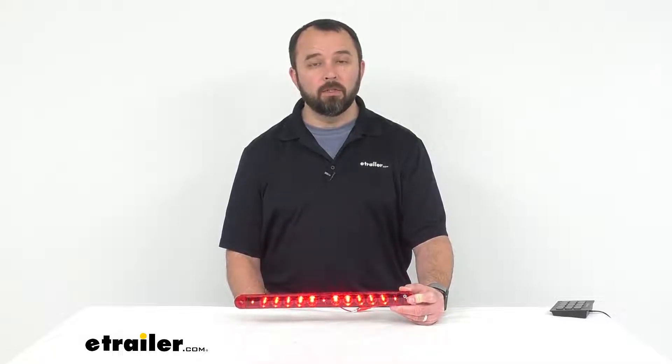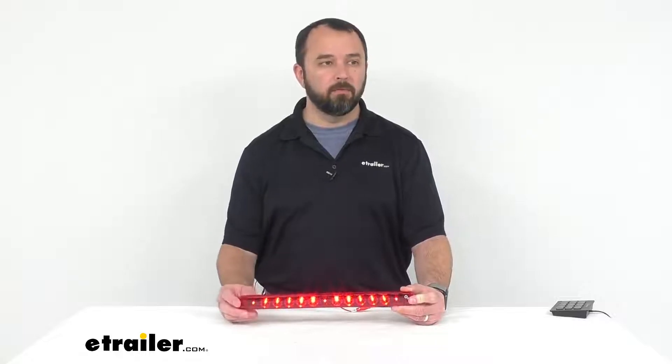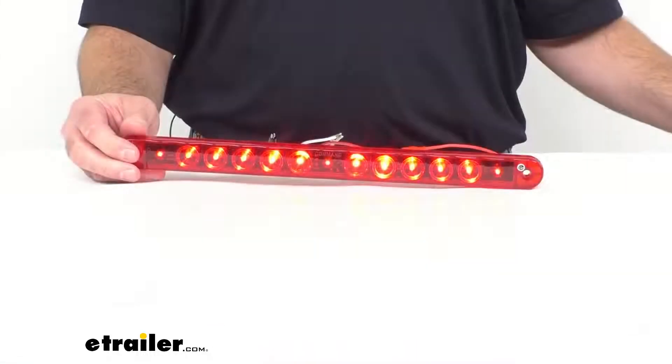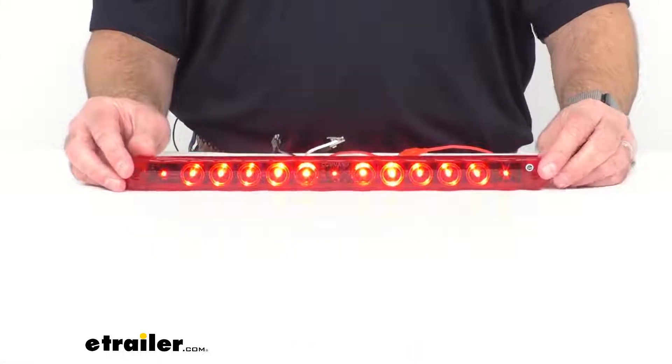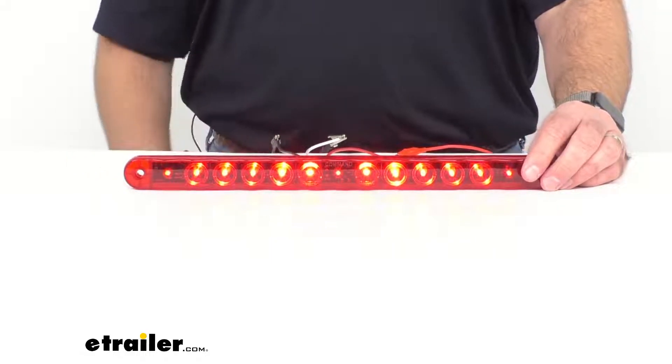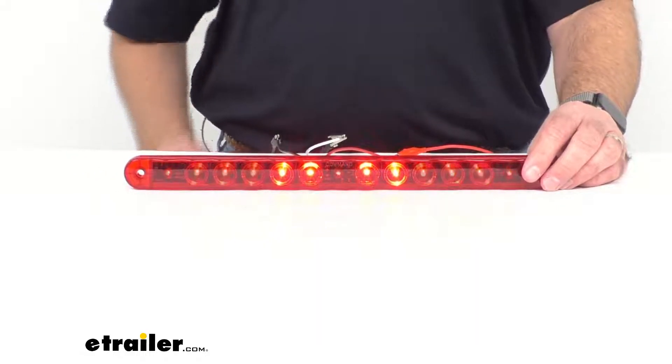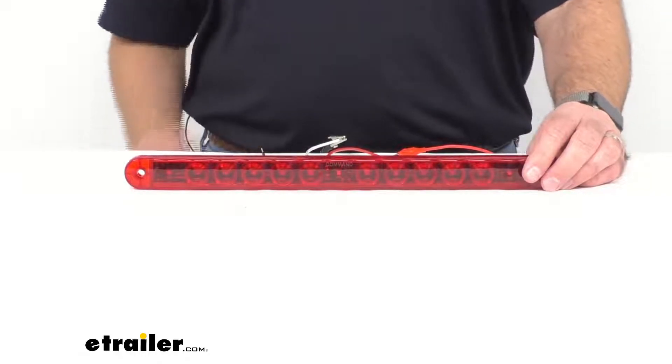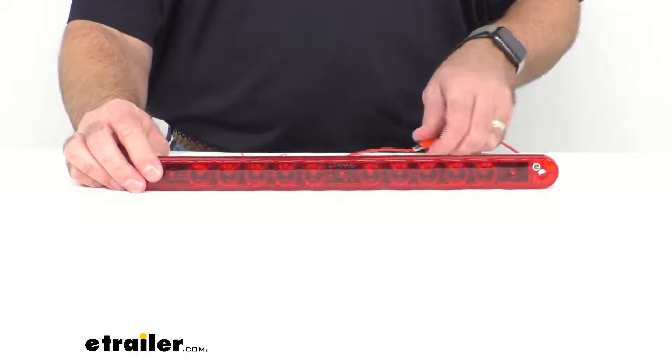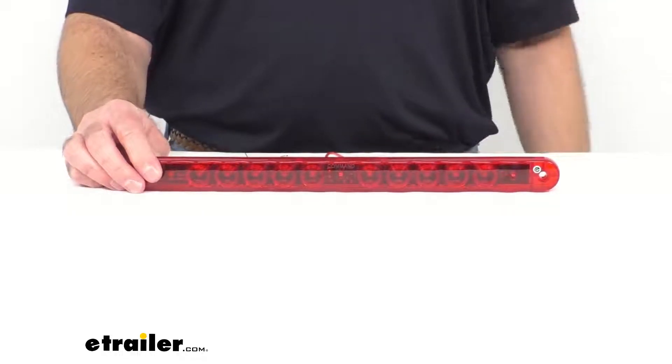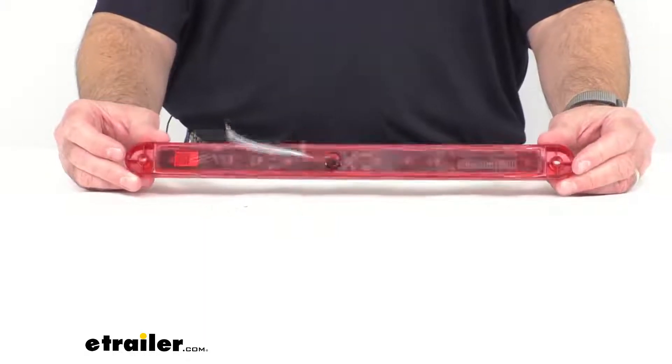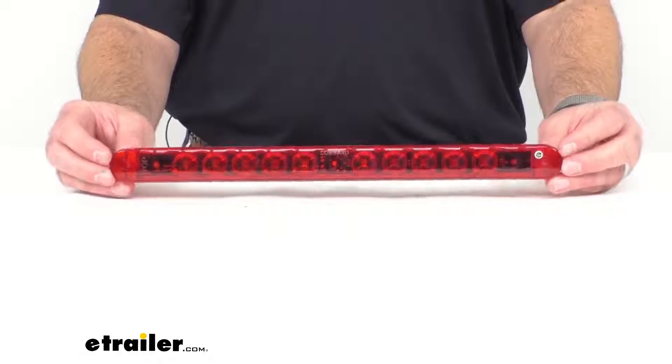Now LEDs do make a great replacement for incandescent lights. They're more efficient, they provide better light with less power output, and there's not going to be any bulbs to replace or brittle filaments. And these LEDs are in a durable polycarbonate base with a red acrylic lens over red LEDs. So this light is sealed in a waterproof housing and lens unit, and it is submersible.